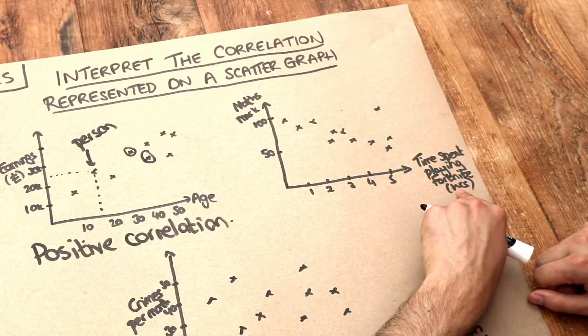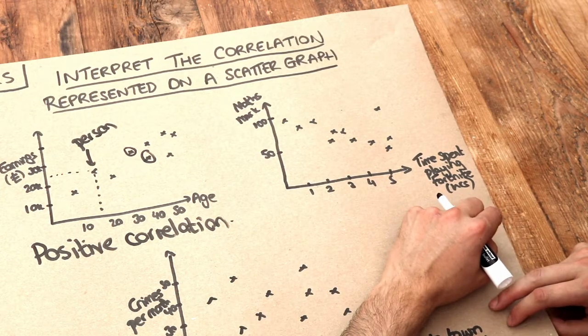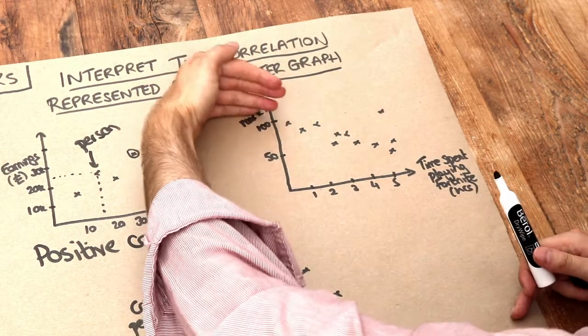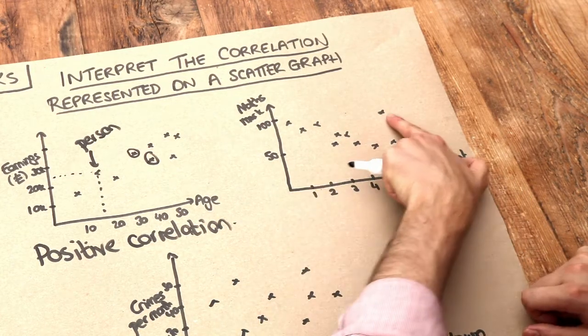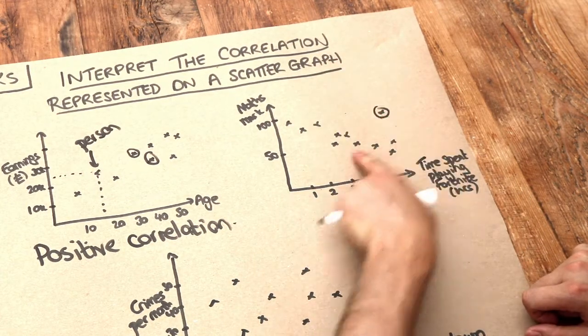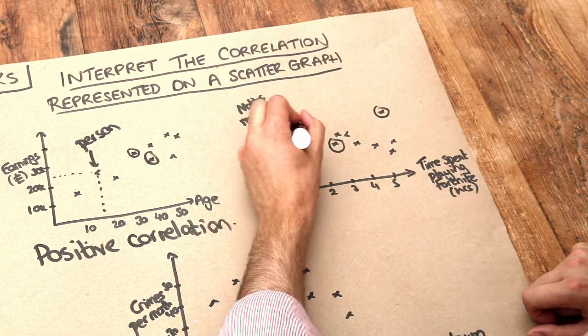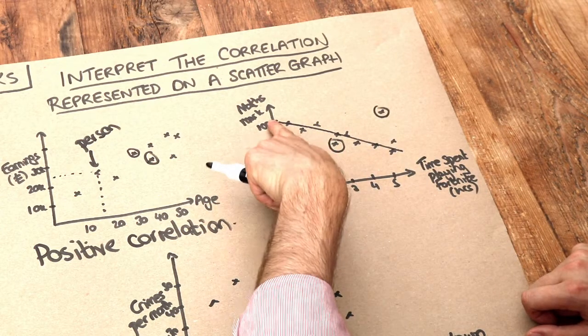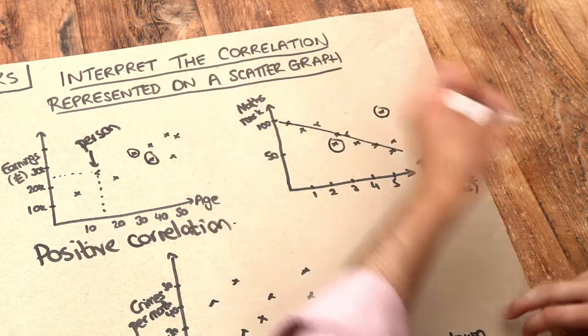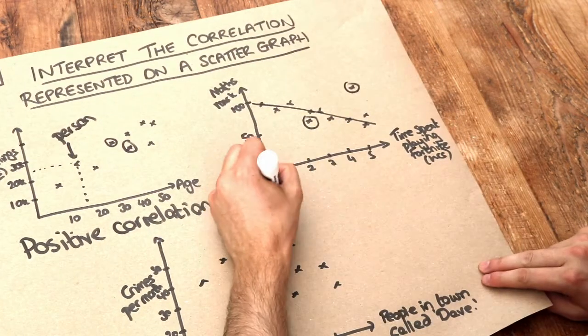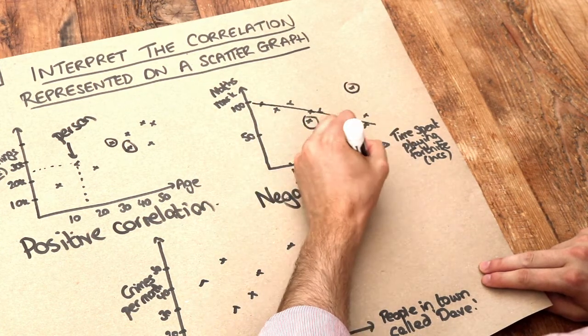What about this one? We've got time spent playing Fortnite in hours per day and maths mark out of 100. Can you see this data has a downward trajectory? That's not always the case—for example, this person played more Fortnite than this person but actually got a higher maths mark. But there's an overall trend that as they spend more time playing Fortnite, they get a worse maths mark. Because this line is going downhill, we say the data has a negative correlation because that line has a negative gradient.